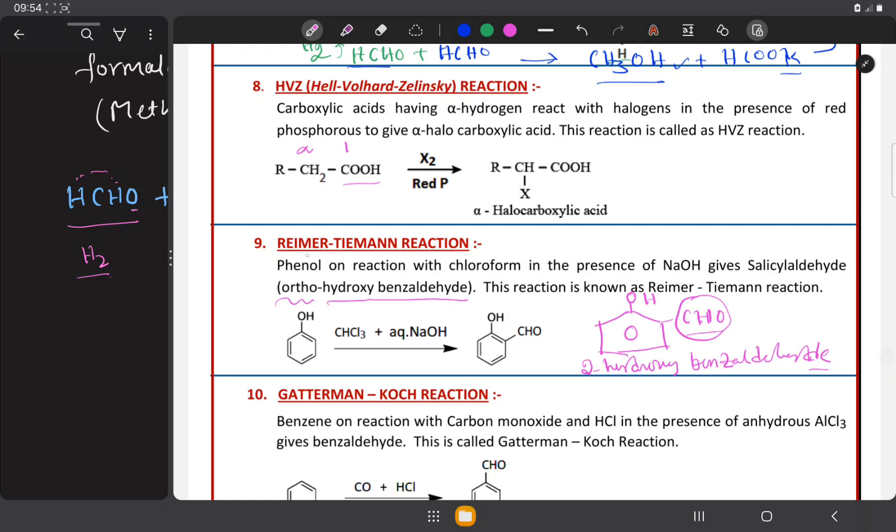So, that's all. That is Riemann-Thiemann reaction. What is Riemann-Thiemann reaction? Phenol reacts with chloroform in the presence of aqueous NaOH to give salicylaldehyde or orthohydroxybenzaldehyde. This can also be called as 2-hydroxybenzaldehyde.